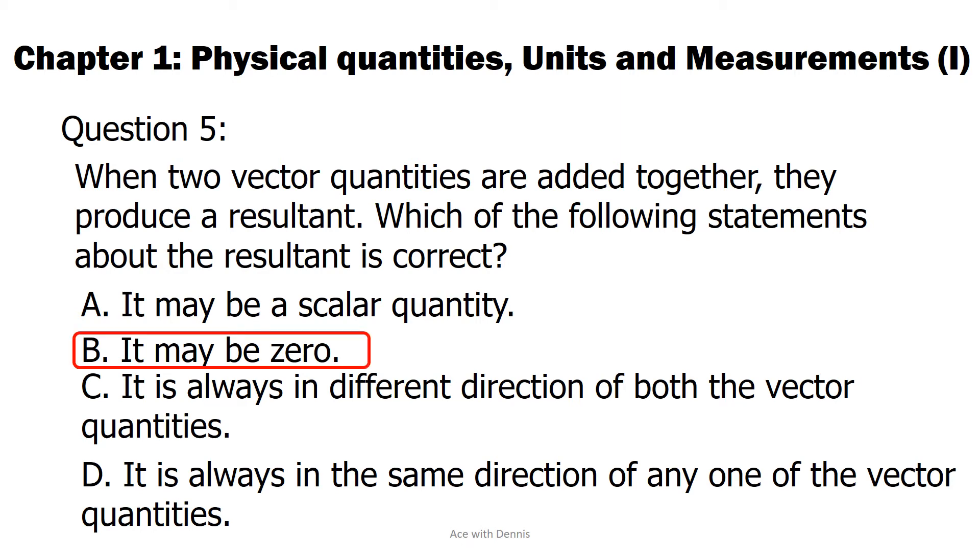The answer is B. It may be zero. When two quantities with the same magnitude and in opposite direction, the resultant will be zero. For answer A, since both quantities are vectors, the resultant must be vector.